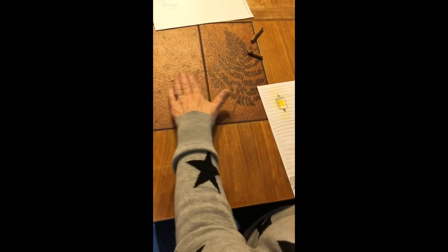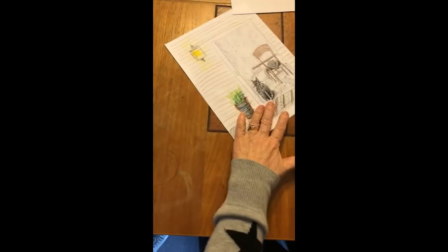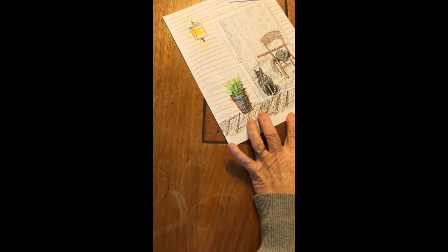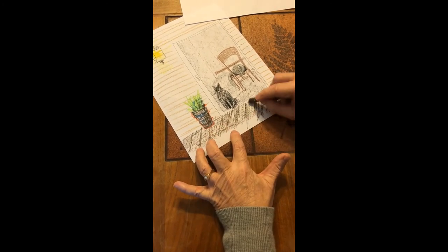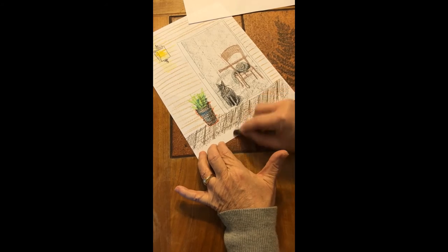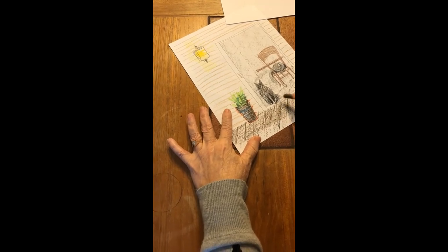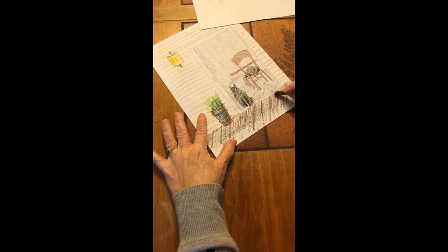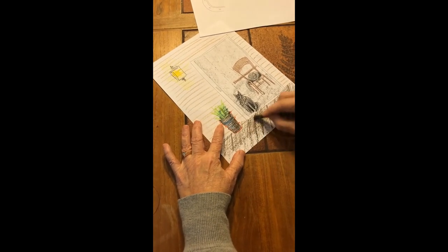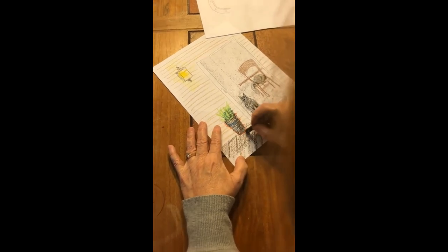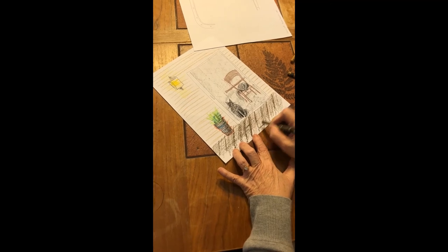My table has a texture here. This is so you can put hot pots on the table and sometimes it's really annoying, but this was really cool. Watch what happens. I get a really interesting texture because I'm working on something other than a smooth surface.